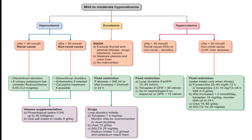For euvolemic hyponatremia due to SIADH: consider potential causes, exclude thyroid and adrenal disease, drugs, infections, and tumors. Measure plasma and urine osmolality. Ensure the patient is not malnourished. Apply fluid restriction if diuresis is less than 500 milliliters or serum sodium increases by less than 2 mmol/L in 24 hours.